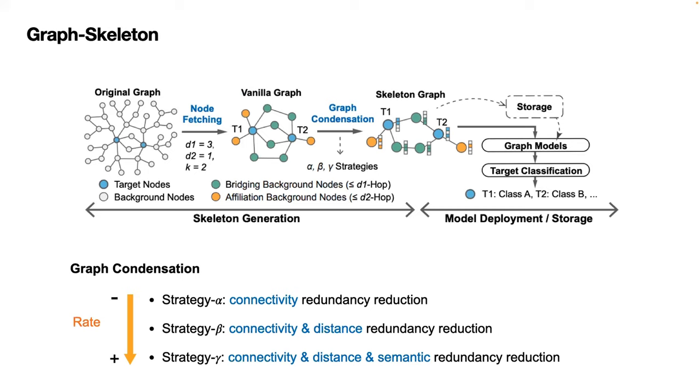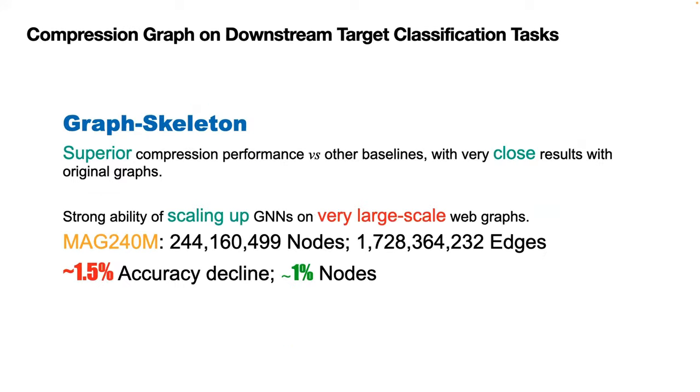The generated skeleton graph is highly informative and friendly for storage and graph model deployment. We conduct downstream target classification tasks based on the compressed graphs from variable datasets. The results show that the graph skeleton achieves superior compression performance against other baselines with very close results with the original graphs.